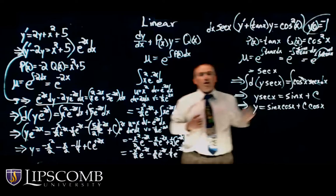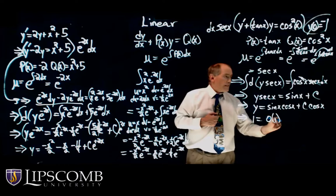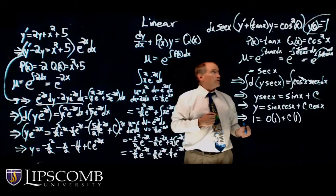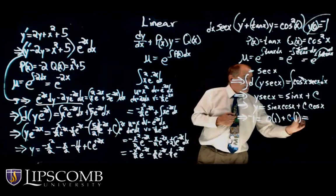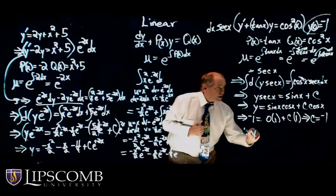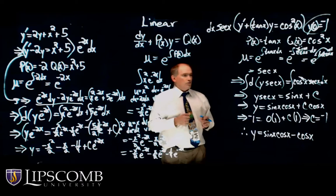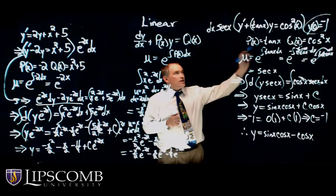Now applying the initial condition y(0) = 1: 1 equals sine(0)·cosine(0) plus C·cosine(0), which gives 1 = 0 + C·1, so C equals 1. Wait — there's a minus 1 there, so C equals negative 1. Therefore, the particular solution is y equals sine of x times cosine of x minus cosine of x. There are no arbitrary constants since it satisfies this initial value problem.